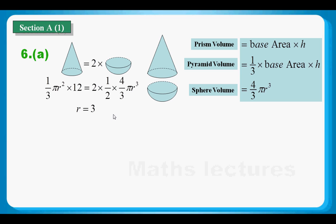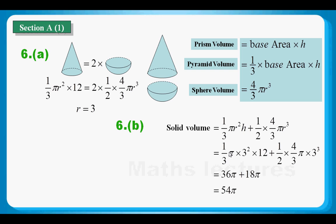And then I would like to go to part B. Part B is asking you to calculate the whole solid volume. So with the radius equals 3, again, this is not difficult to do the substitution and then do the final calculation.